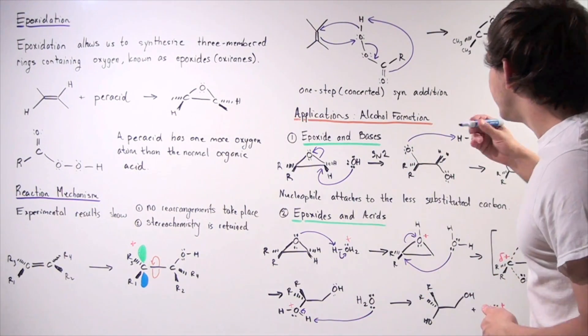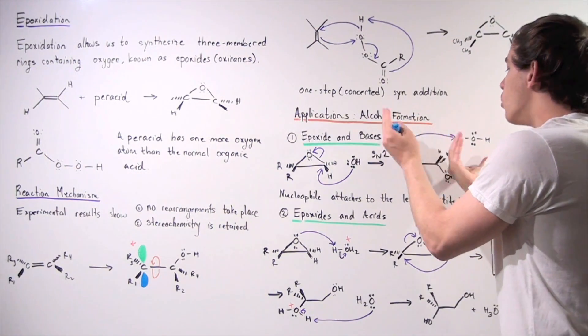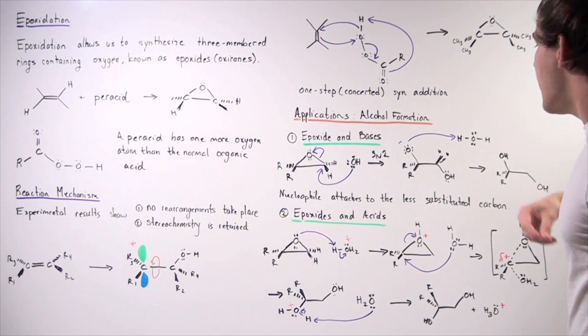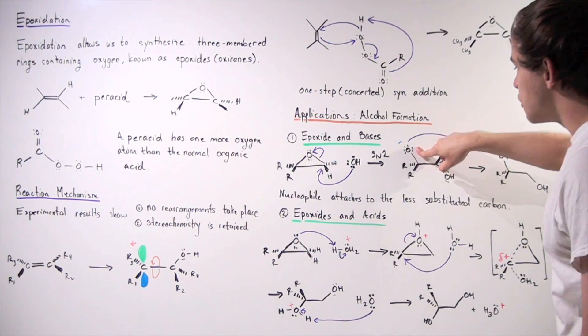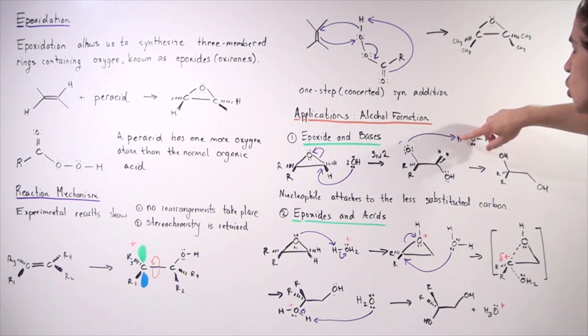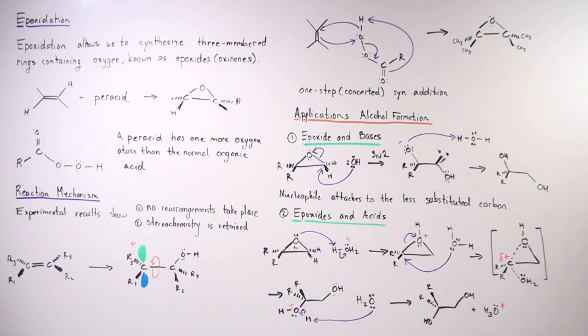And our intermediate will look like this. This intermediate will have a negative charge on the oxygen, so our ring has now opened up. Now, at the final step, the water molecule, the solvent molecule, will come very close to this negatively charged oxygen. This oxygen will take away the H, reforming our base as well as our alcohol.